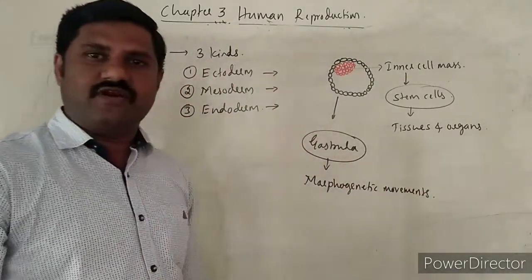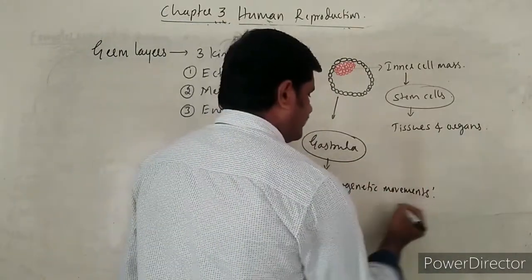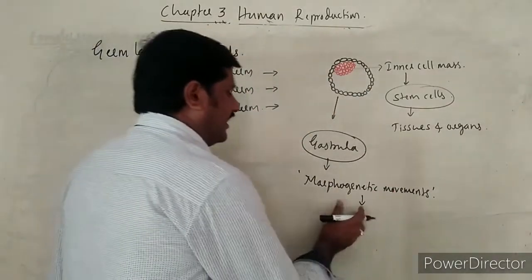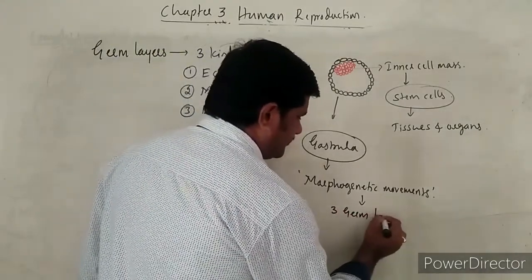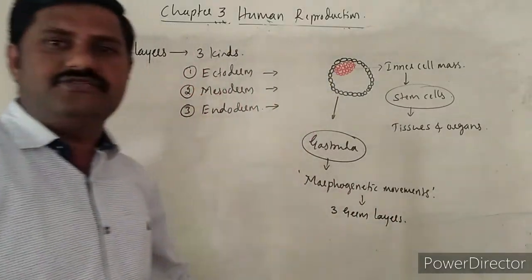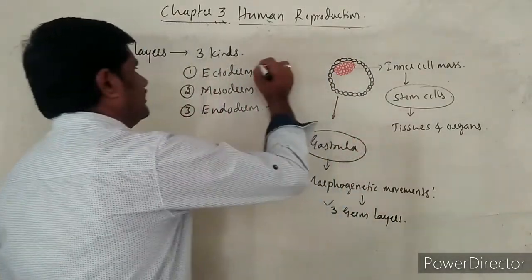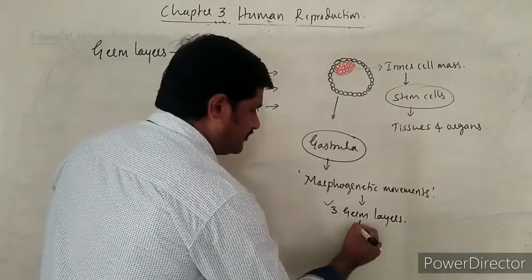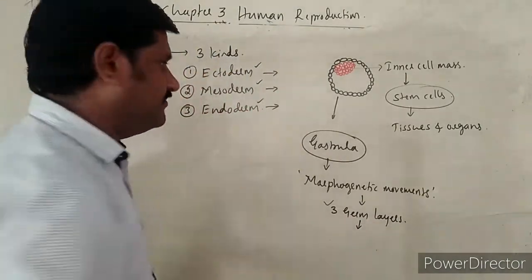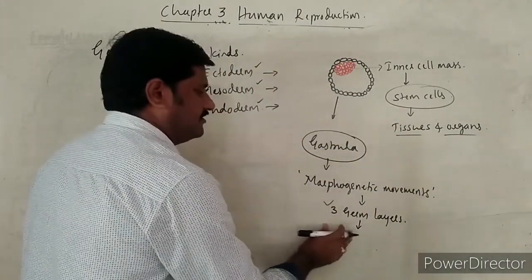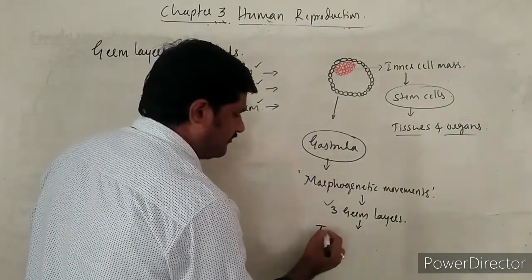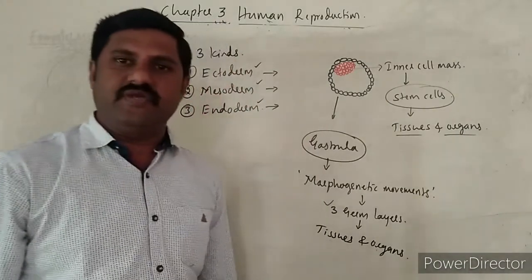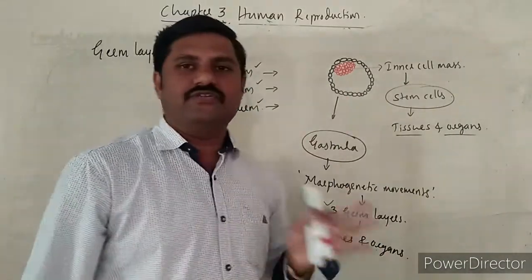Due to this morphogenetic movement, the inner cell mass arranges into three germ layers. These three germ layers are ectoderm, mesoderm, and endoderm. These three germ layers are responsible for the formation of different types of tissues as well as organs in the developing baby.